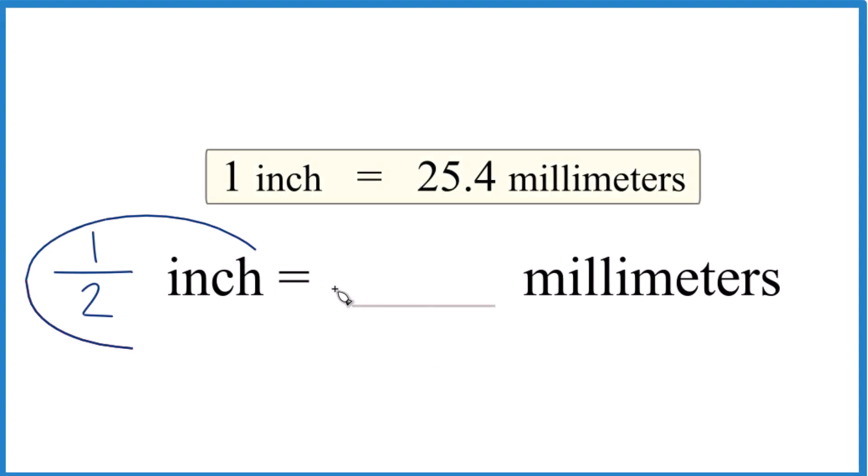So let's convert one-half of an inch to millimeters. Here's how you do it. First off, one inch equals 25.4 millimeters.